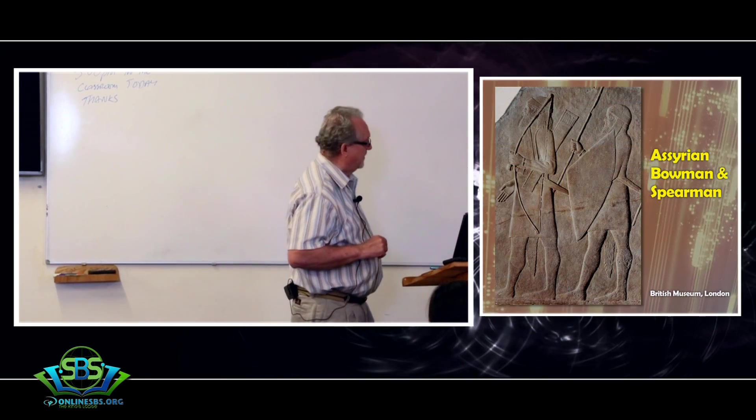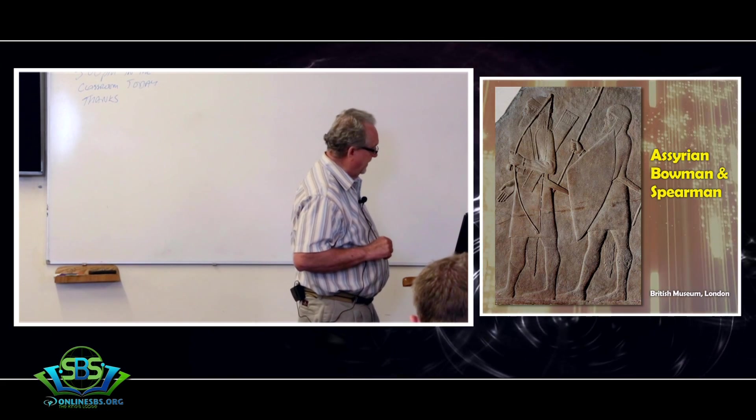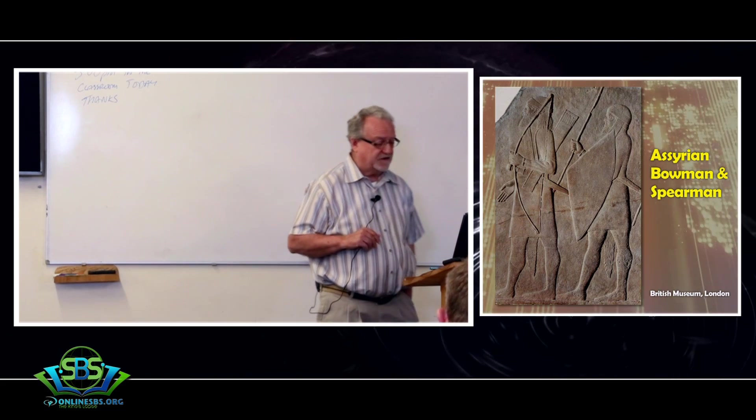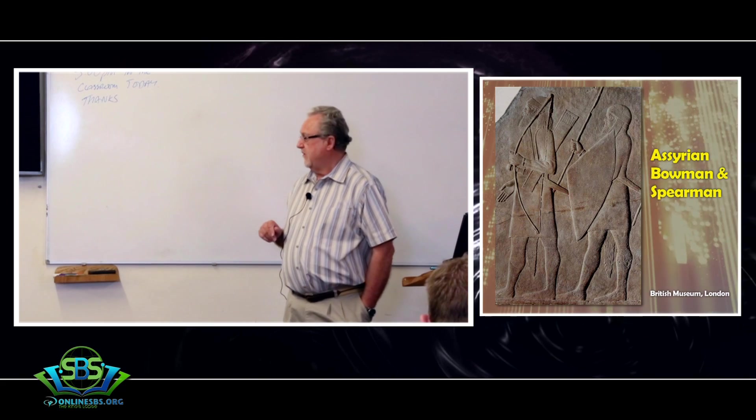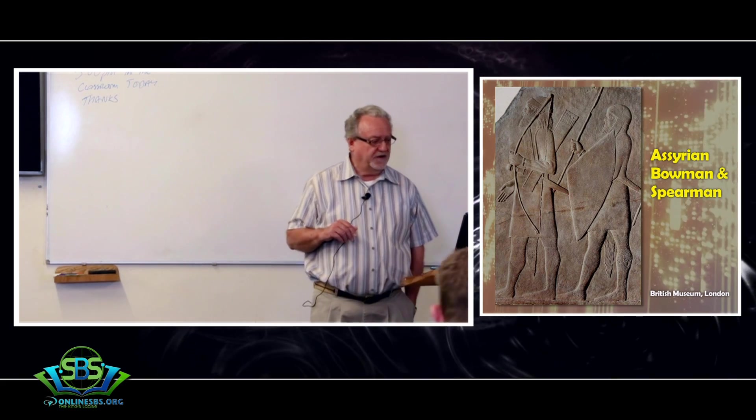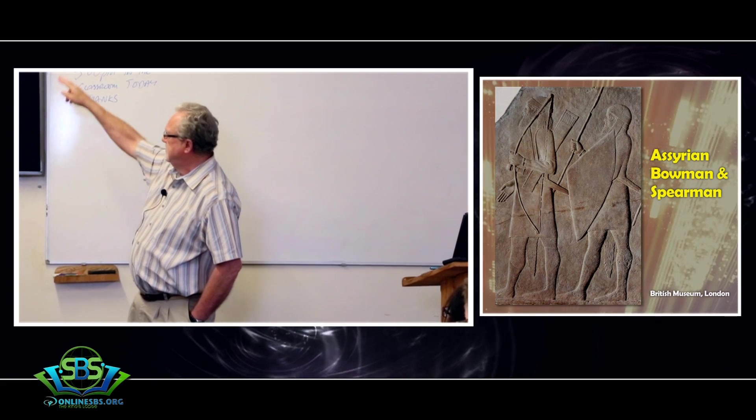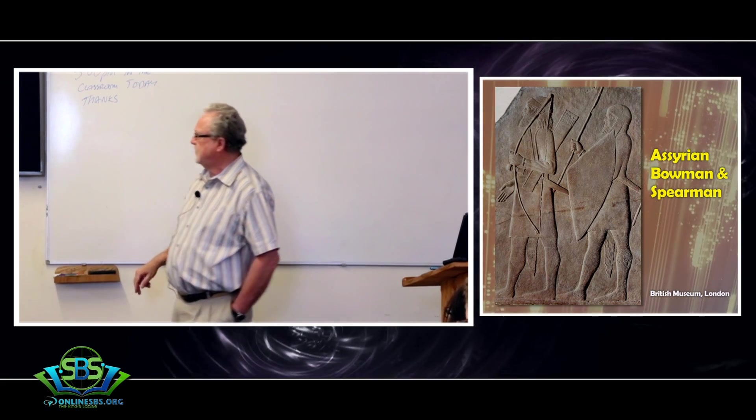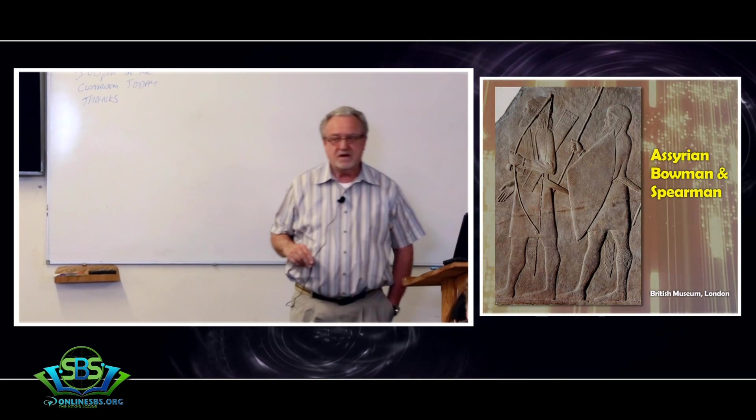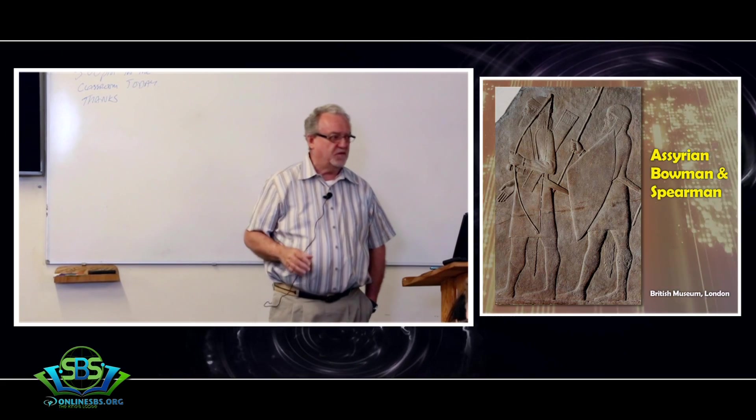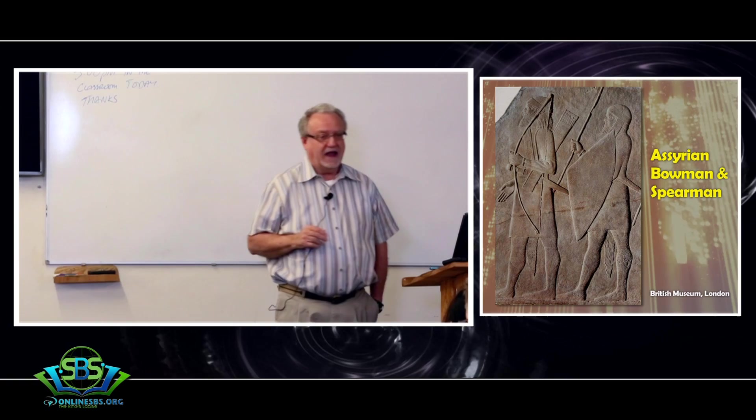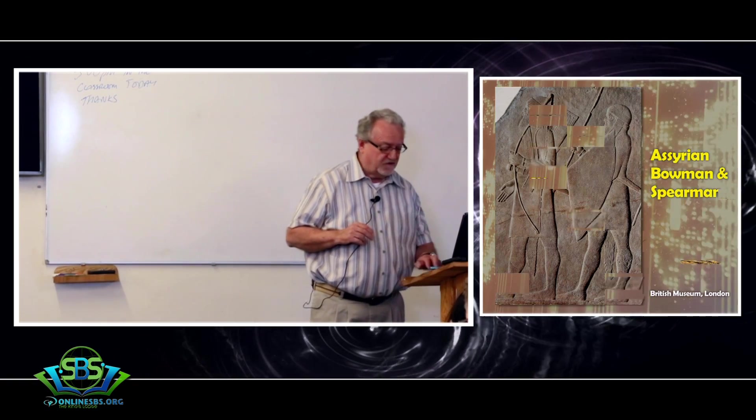These are Assyrian bowmen and spearmen. You may have seen these at the British Museum when you were there a few weeks ago. You can see that the bowmen has a quiver of arrows. He also has a short sword. The spearmen has a shield as well as a short sword. Bowmen are longer range. Spearmen are a bit shorter range. And slingers are long range as well.